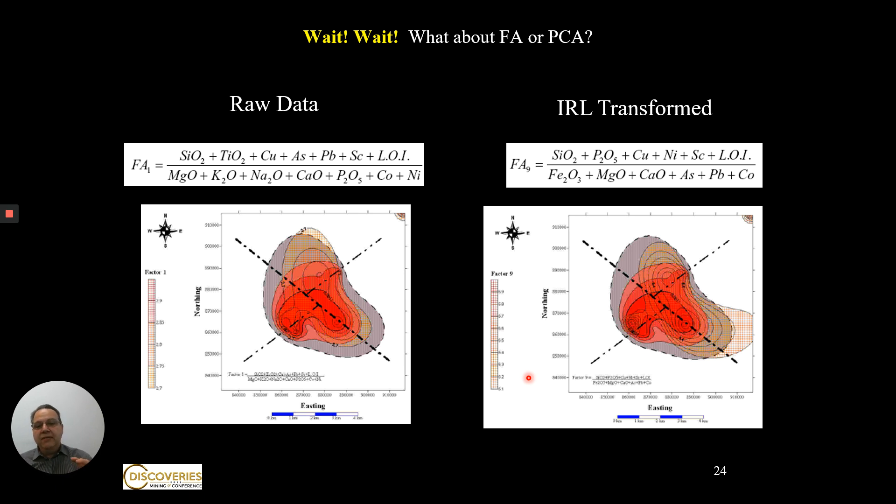The factor analysis applied to the ILR gave a much better distribution of the anomaly.